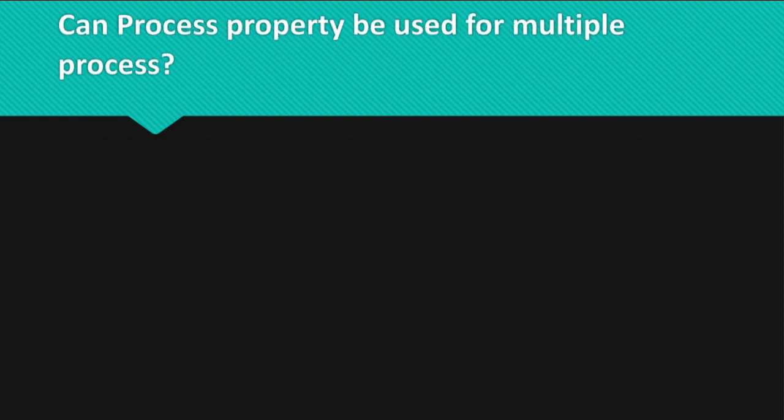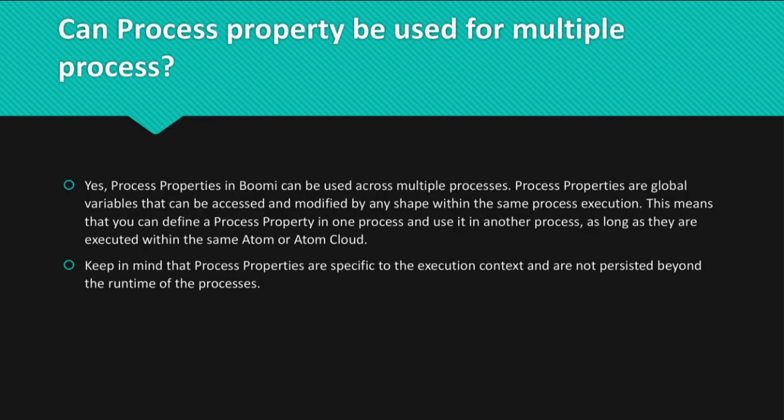Question: Can process property be used for multiple processes? Answer: Yes, process properties in Bumi can be used across multiple processes. Process properties are global variables that can be accessed and modified by any shape within the same process execution. You can define a process property in one process and use it in another process, as long as they are executed within the same atom or atom cloud. Keep in mind that process properties are specific to the execution context and are not persisted beyond the runtime of the processes.